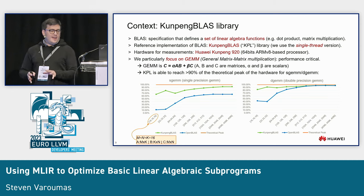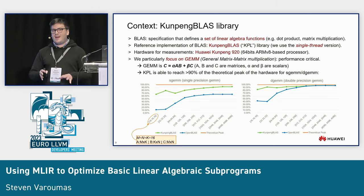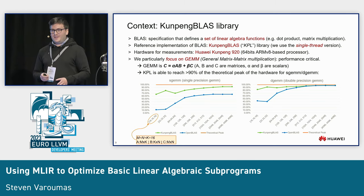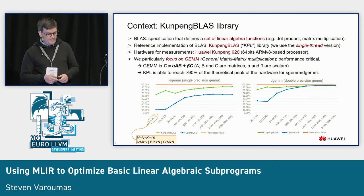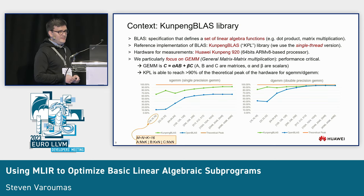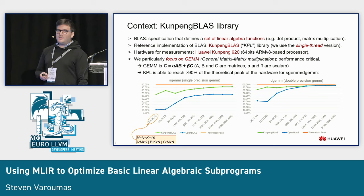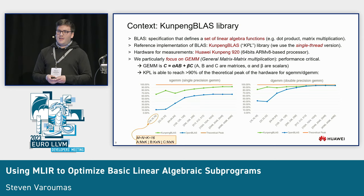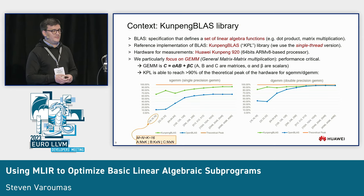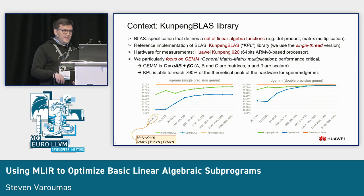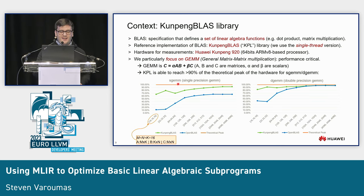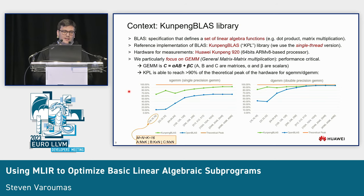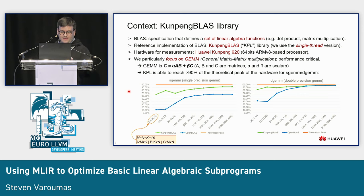The hardware we use for measurement is an in-house hardware called the Kunpeng 920, an ARM 64-bit machine. We focus mostly on the GEMM operation of BLAS — general matrix multiplication — because it is quite performance-critical and can be a bottleneck in many applications. KPL is able to reach more than 90% of the theoretical peak of this hardware in both single and double precision GEMM, and it competes quite well with other libraries such as OpenBLAS.